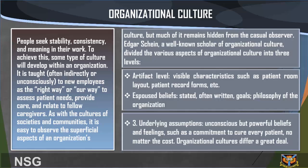As with the cultures of societies and communities, it is easy to observe the superficial aspects of an organization's culture, but much of it remains hidden from the observer. Edgar Schein, a well-known scholar of organizational culture, divided the various aspects of organizational culture into three levels.